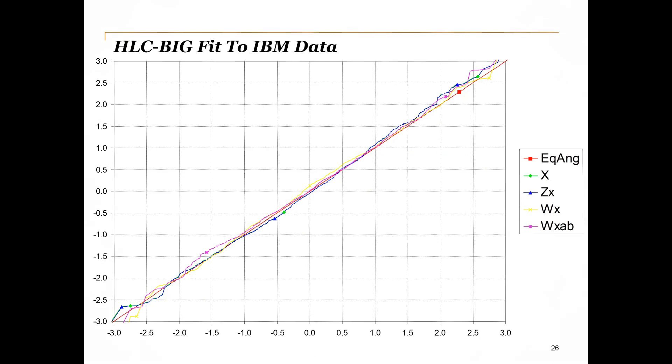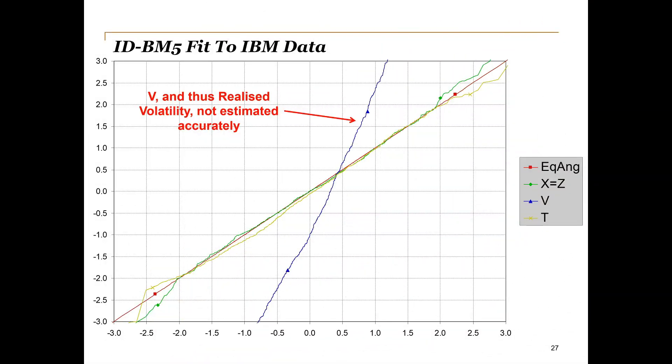Turning to the Brownian motion model for the 5-minute intraday data, it is interesting to note that the fit for Z is better than it had been for the daily and high-low close models given a few slides back. This indicates the information gain as we use more of the available data. However, we see that the assumptions on the volatility are still not accurate.